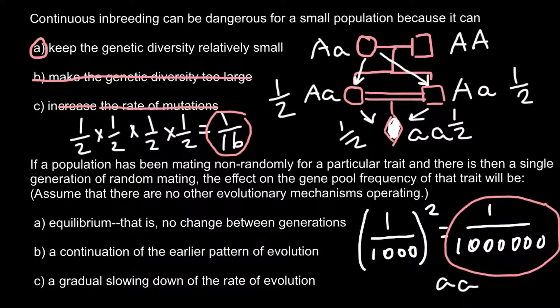Next question: if a population has been mating non-randomly for a particular trait and there is then a single generation of random mating, the effect on the gene pool frequency of that trait would be — assuming no other evolutionary mechanisms are operating. Answer A: equilibrium — no change between generations. Answer B: continuation of the earlier pattern of evolution. And answer C: gradual slowing down of the rate of evolution.